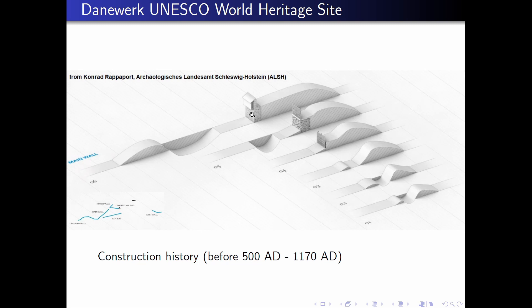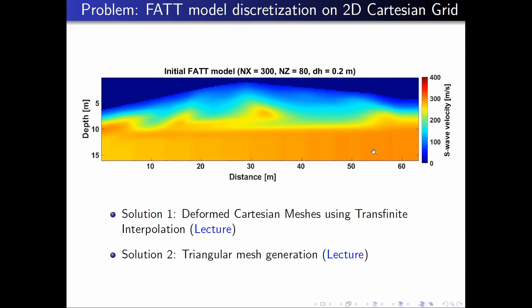Two archaeo-geophysical questions related to the Dannewerk are quite interesting: First, can we detect the cobblestone and brick stone walls by geophysical methods? And second, can we distinguish between the different construction phases of the Dannewerk? Before discussing these questions, Manuel Zolchow estimated an S-wave velocity model using first arrival travel time tomography from the SH data acquired over the topography of the Dannewerk, showing some diffuse high velocity anomalies within an otherwise gradual velocity increase from surface to bottom.